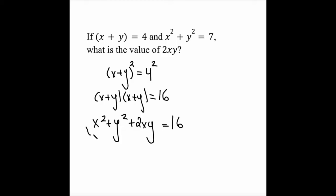Now x squared plus y squared, I know the value of, right? It tells me that it's 7. So I can say that this is 7 plus 2xy equals 16. Subtract 7 on both sides, what do I get? I find that 2xy is equal to 9. So that's the answer to this question.